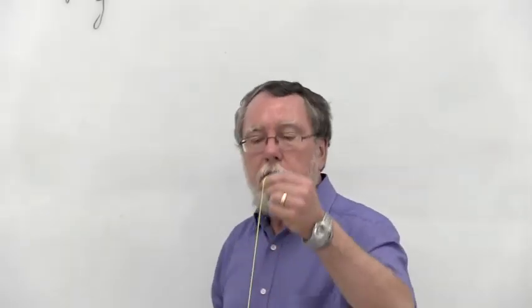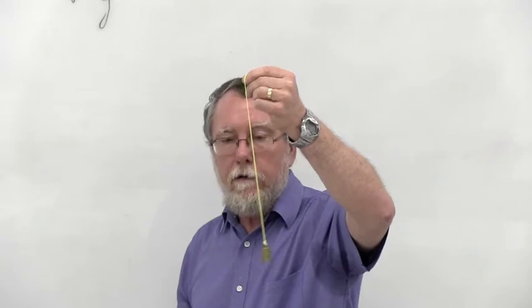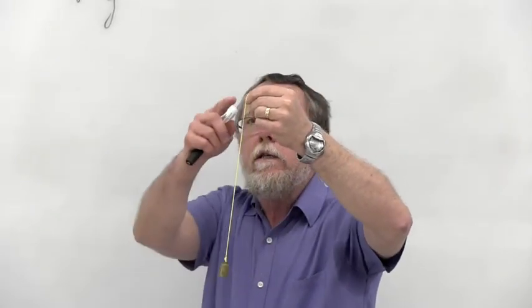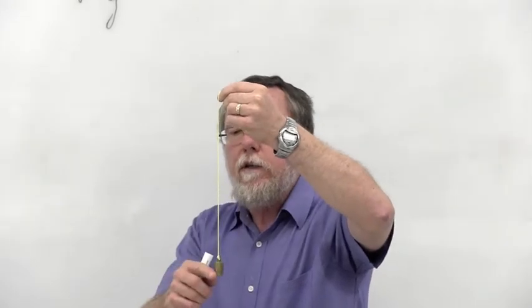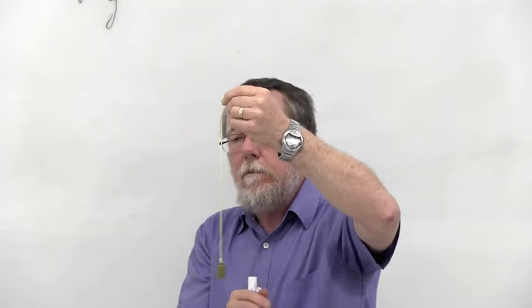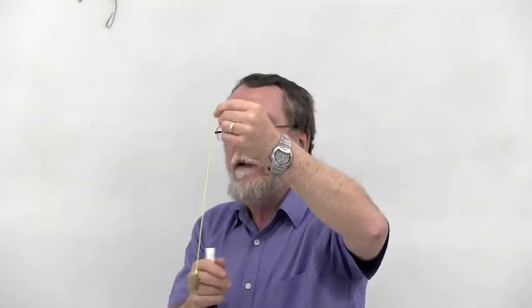This is a simple pendulum. Now you are not to go to sleep at this point, but all I want to show you here is it's got a length from the point of suspension to the center of mass of the bob, and the period of the pendulum is the time it takes for a full cycle across and back again.